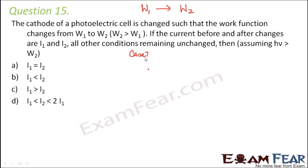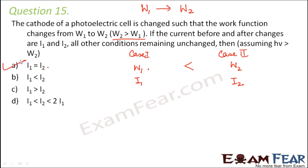So we have W1 less than W2. We need to find the relation between I1 and I2. Current depends on the number of photoelectrons emitted, which depends on light intensity — not on the work function. So current is independent of the work function. Therefore I1 equals I2, and the correct answer is option A, because current is independent of work function.